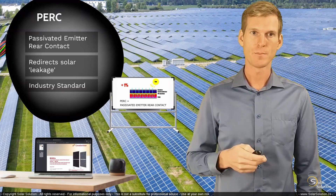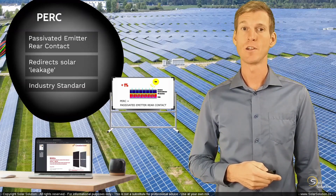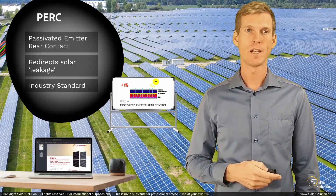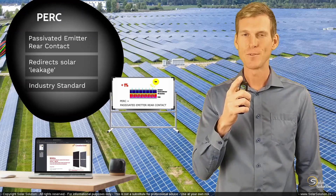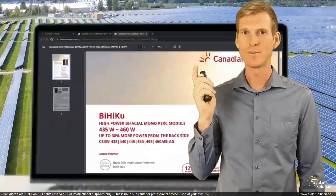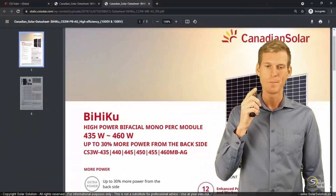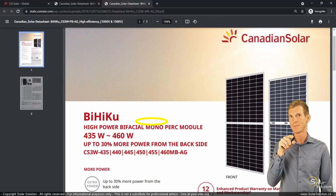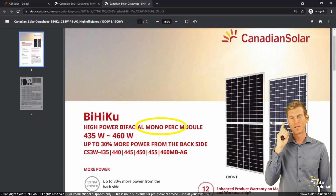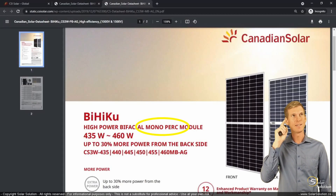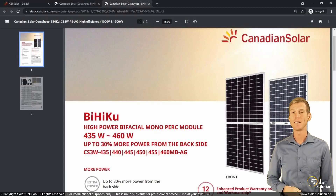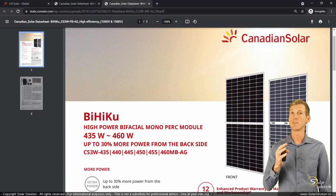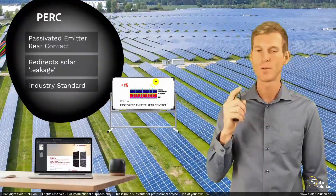That's what PERC — Passivated Emitter Rear Contact technology — stands for and how it works. Here you can see on the panel we looked at before that the description already says monocrystalline and PERC, so now you can understand what all these terms mean. This concludes the small subchapter on PERC.